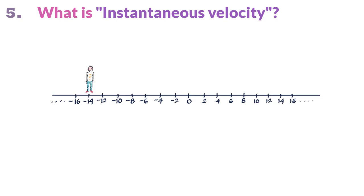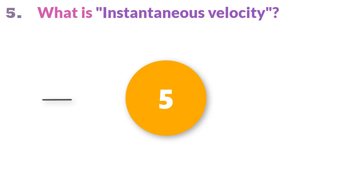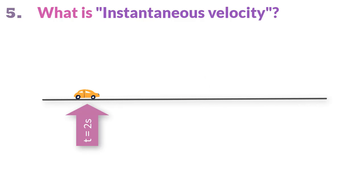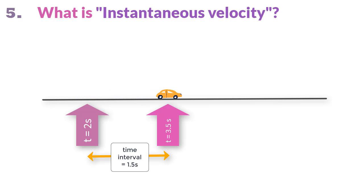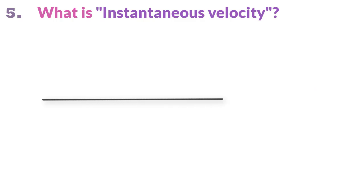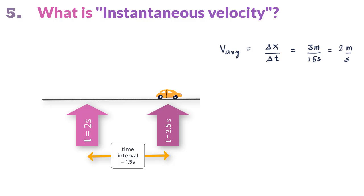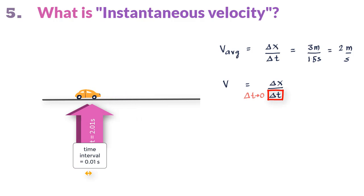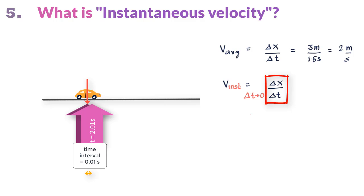Instantaneous velocity is the velocity of a particle at any instant of time, rather than over an interval. An instant is not even a very short time interval — it is a specific moment, like at t equals 2 seconds or t equals 5 seconds. We saw that average velocity is calculated over a measurable period, but if you shrink delta t so much that it approaches 0, the velocity you get is the velocity at that exact point in time. Note that while delta x and delta t become very small, their ratio may not.